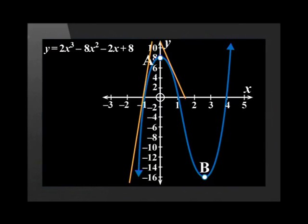The tangents around point A are all above the curve, so we say that the curve is concave up. The tangents around point B are all below the curve, so we say that the curve is concave down.